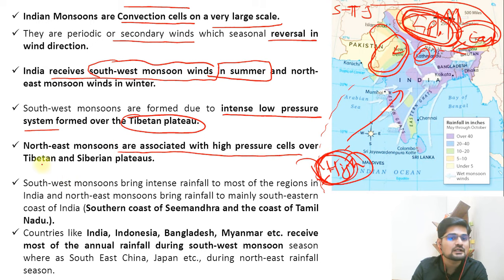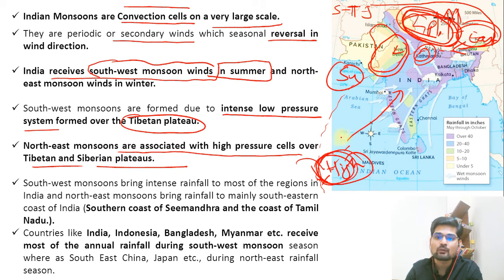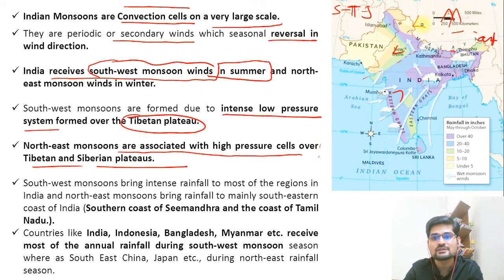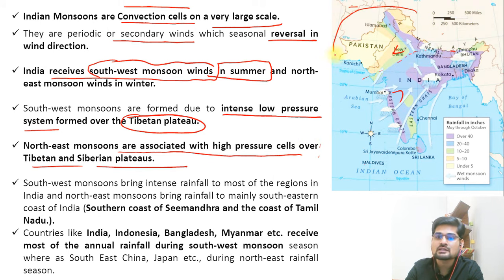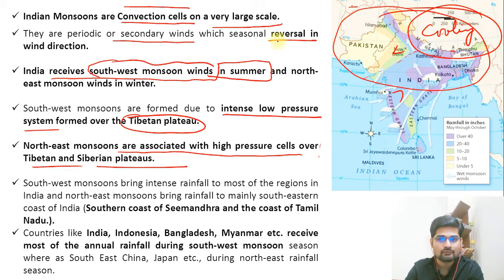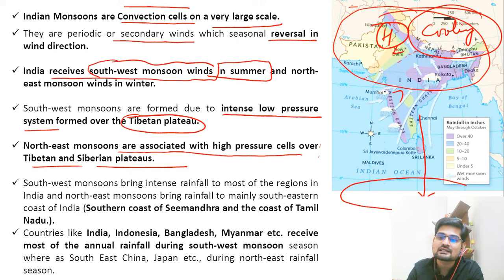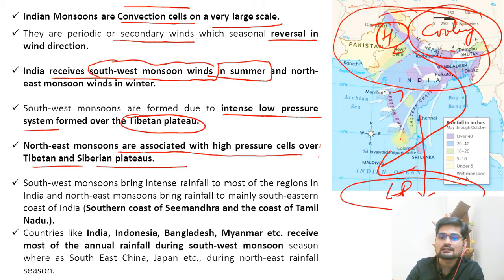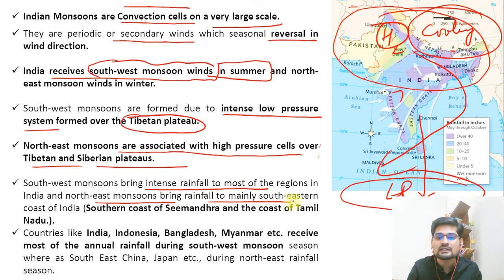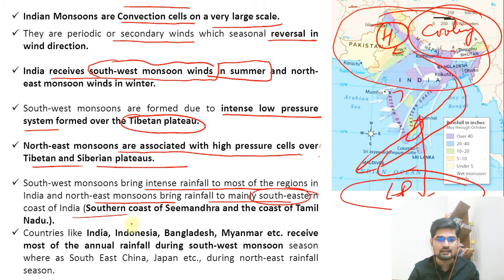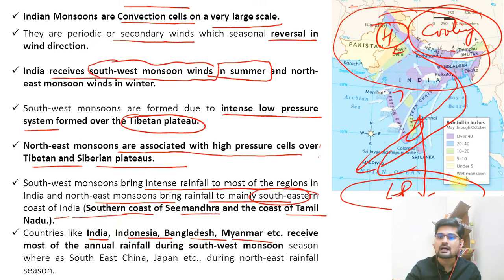The northeast monsoons are associated with high-pressure cells over the Tibetan and Siberian Plateau. In winters in the northern hemisphere, exactly the opposite happens — the Himalayan region cools down, creating cool, dense, high-pressure air. Since the sun is shining on the Tropic of Capricorn, low pressure moves south. Wind starts blowing from land toward the ocean. Southwest monsoons bring intense rainfall to most of India, while northeast monsoons bring rainfall to the southeastern coast — the southern coastal zone of Andhra Pradesh and Tamil Nadu — along with countries like India, Indonesia, Bangladesh, and Myanmar.